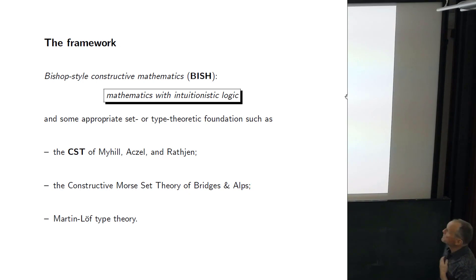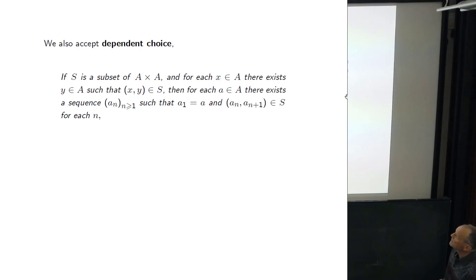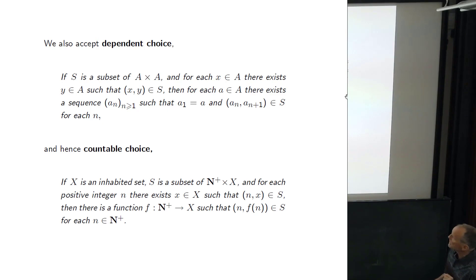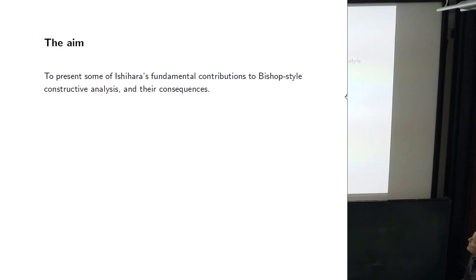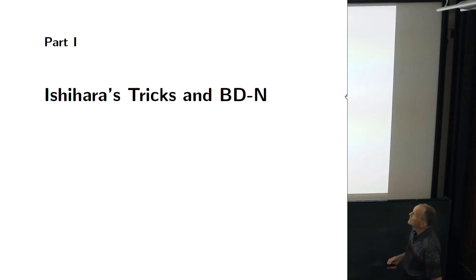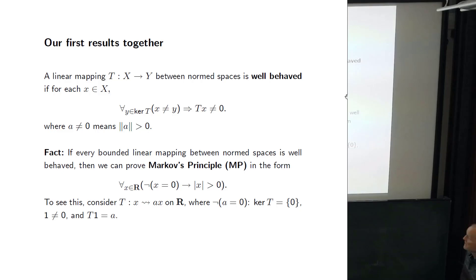The framework is Bishop's constructive mathematics, and I'm going to use dependent choice and hence countable choice. The aim is to present fundamental contributions by Hajime to both analysis and foundational issues. The first part is Shihara's tricks and BDN. Here is a result from our very first paper together — we did the work in 1988.